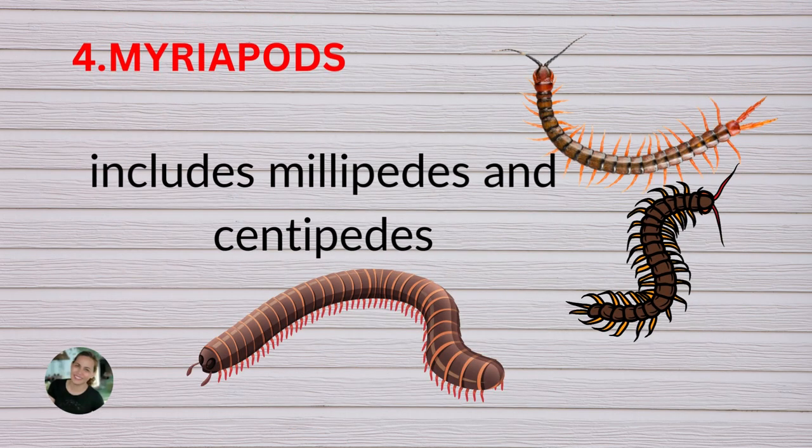The last group of arthropods are myriapods. Myriapods include millipedes and centipedes.